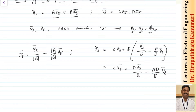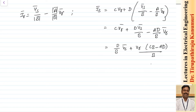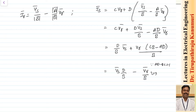Simplifying further, we take Vr as common: Is = (D/B)·Vs + Vr·(C − AD/B). Since we know that AD − BC = 1, the term CB − AD divided by B gives a negative sign, so the expression becomes Is = (D/B)·Vs − Vr/B. Let us take this as equation number 2.